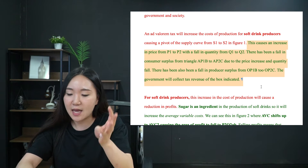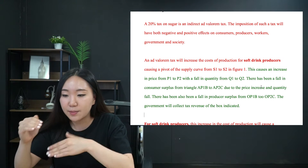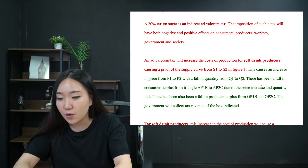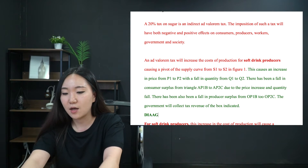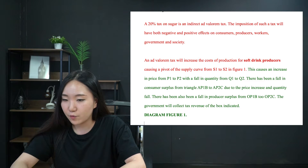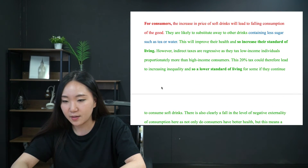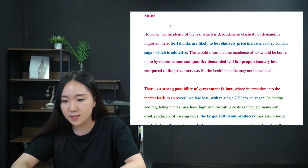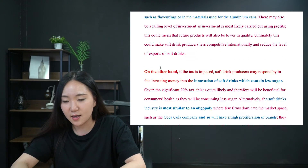If they mention a tax, subsidy, externality, maximum price, or minimum price — whatever — you have to explain the diagram first. So I put diagram figure 1 here. For soft drink producers, you'll notice I start every KAA paragraph with 'for consumers,' then 'government failure,' then 'for workers.' Just get into the habit — it's nice and simple.